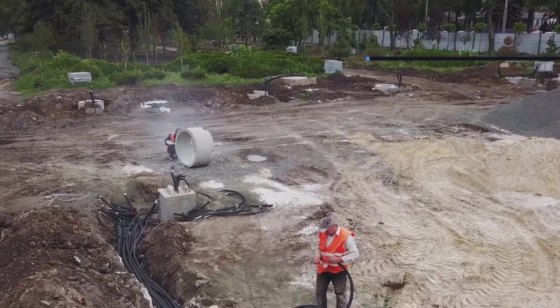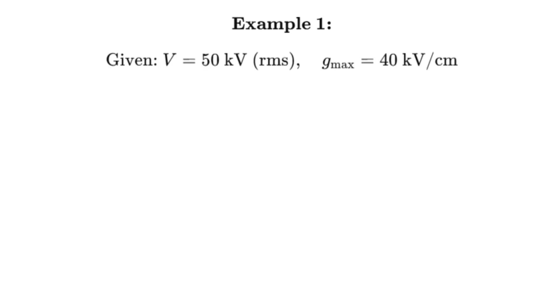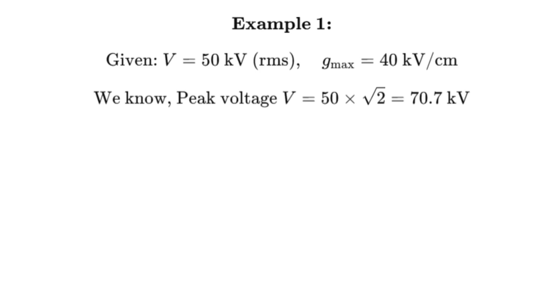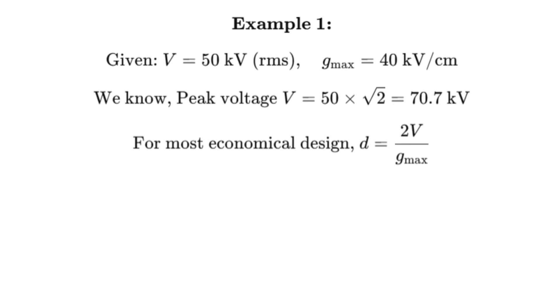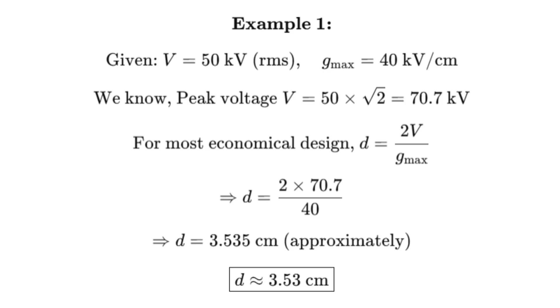Let's make it practical. Example 1: Find the most economical diameter of a single-core cable used on a 50 kV single-phase system, where the maximum permissible dielectric stress is 40 kV per centimeter. Peak voltage V = 50 × √2 = 70.7 kV. Maximum stress Gmax = 40 kV/cm. So the most economical conductor diameter d = 2V / Gmax = (2 × 70.7) / 40, which gives approximately 3.53 centimeters.